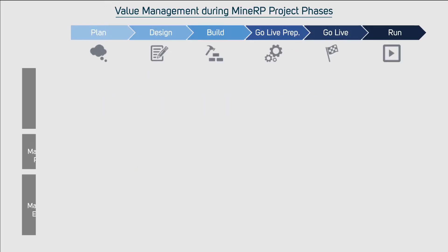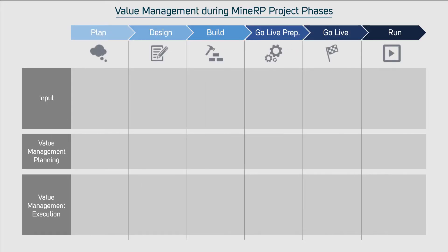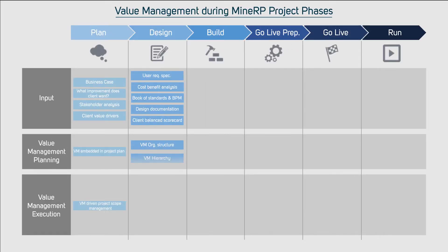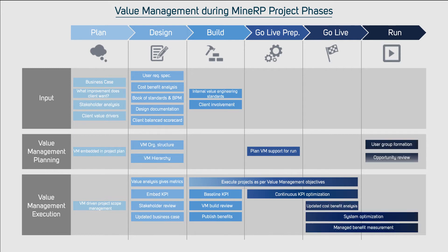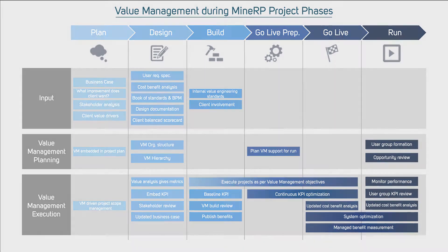Together with the six-by-six method, a value management approach must be driven where the business case can be broken down into business KPIs which can be measured, optimized, and where value management is tracked and executed to ensure the project delivers the sold value to the business.